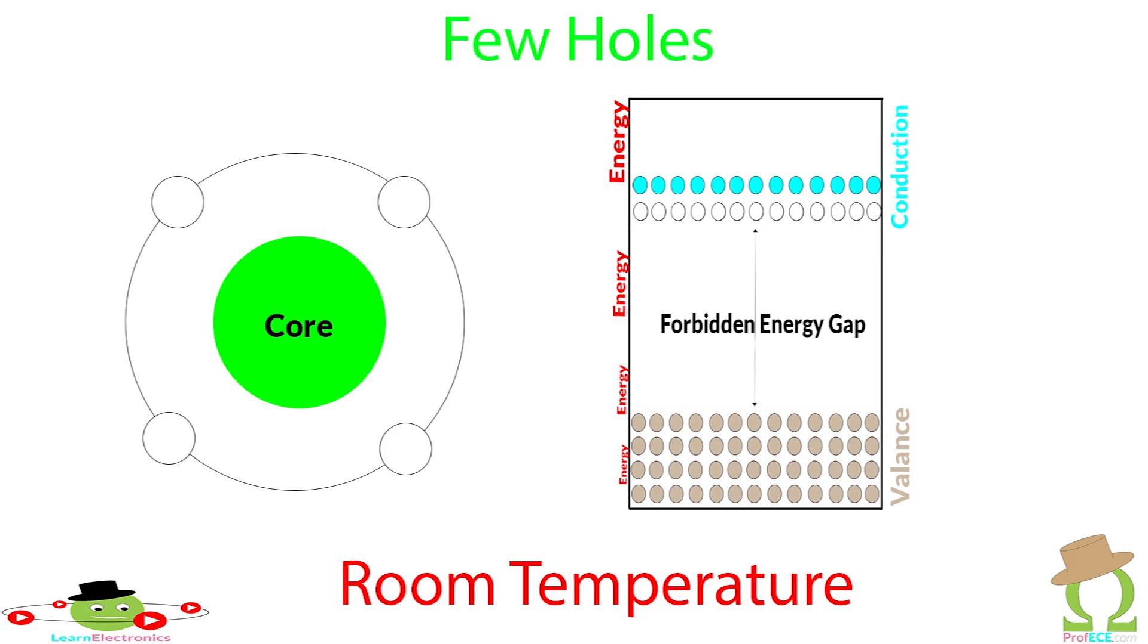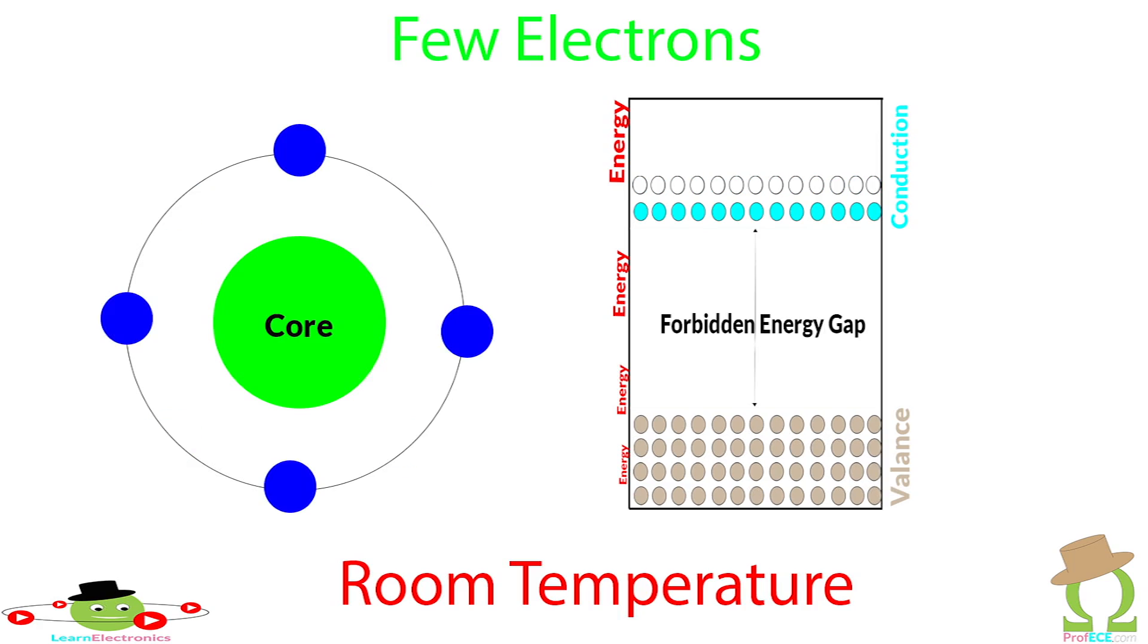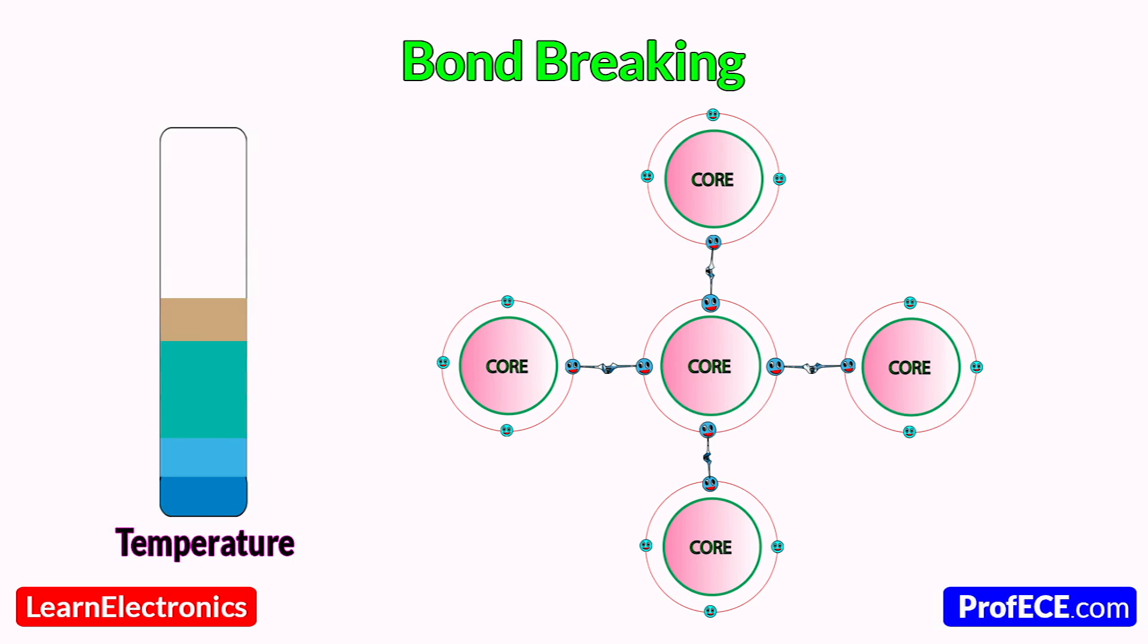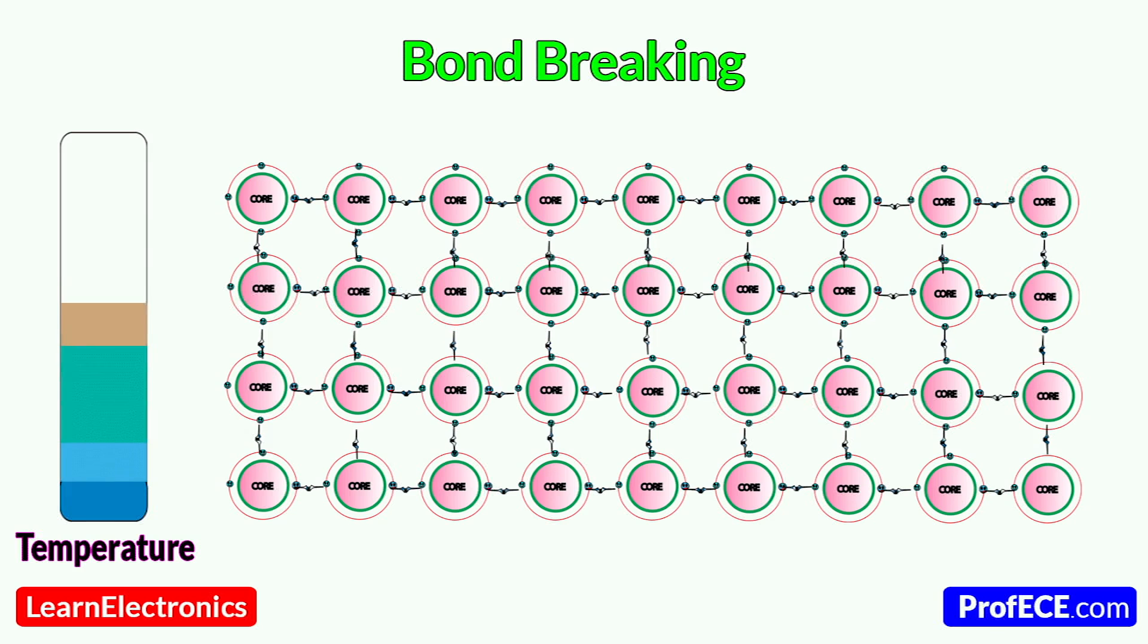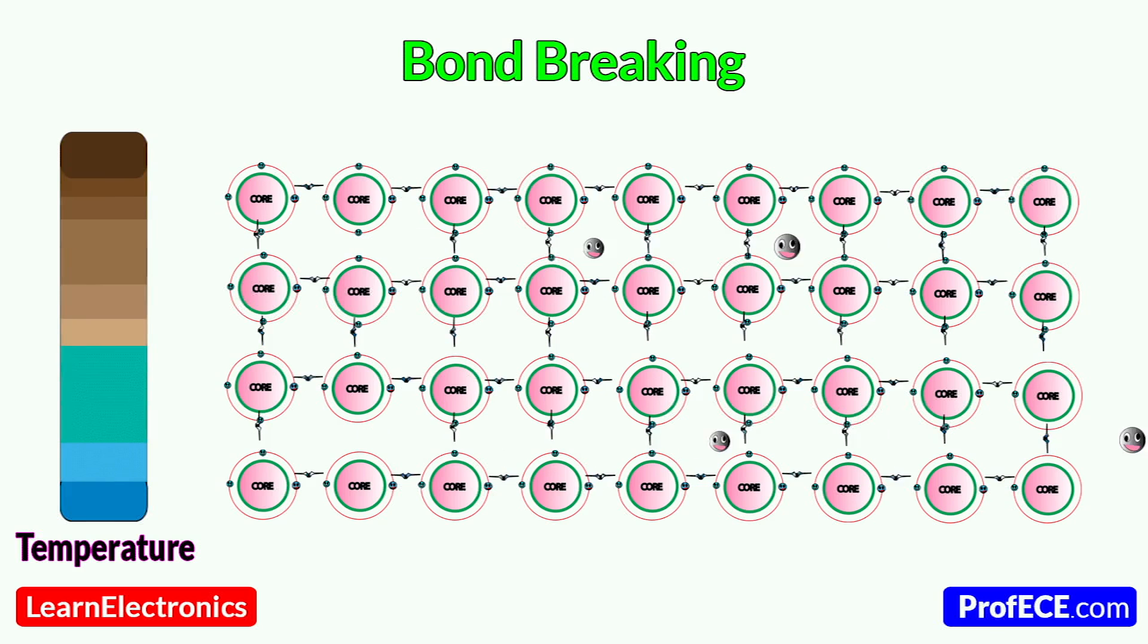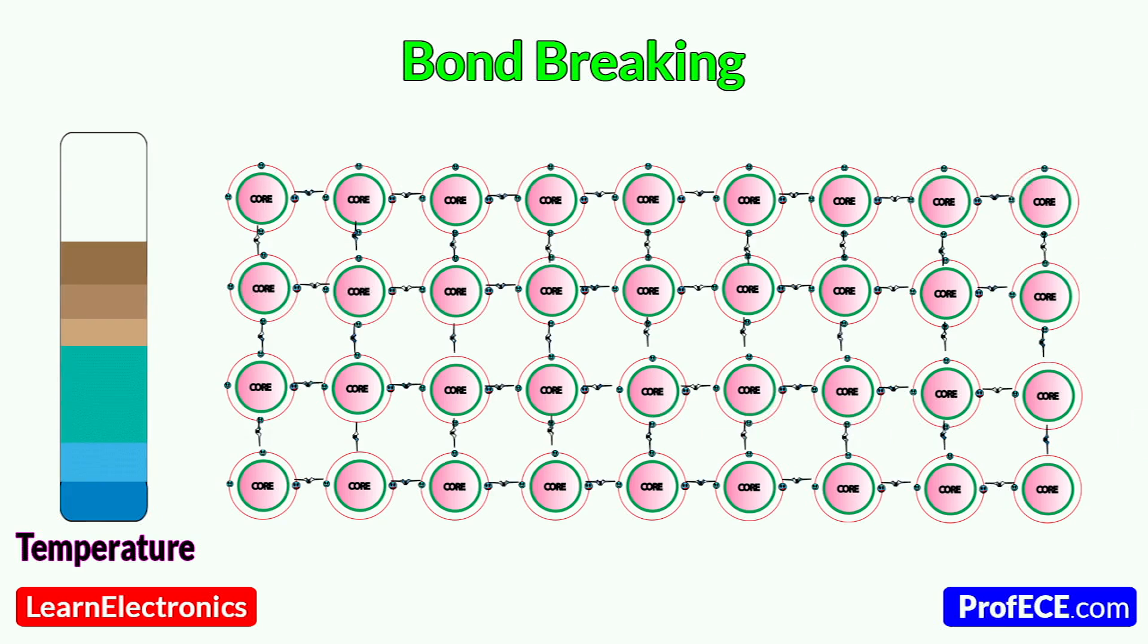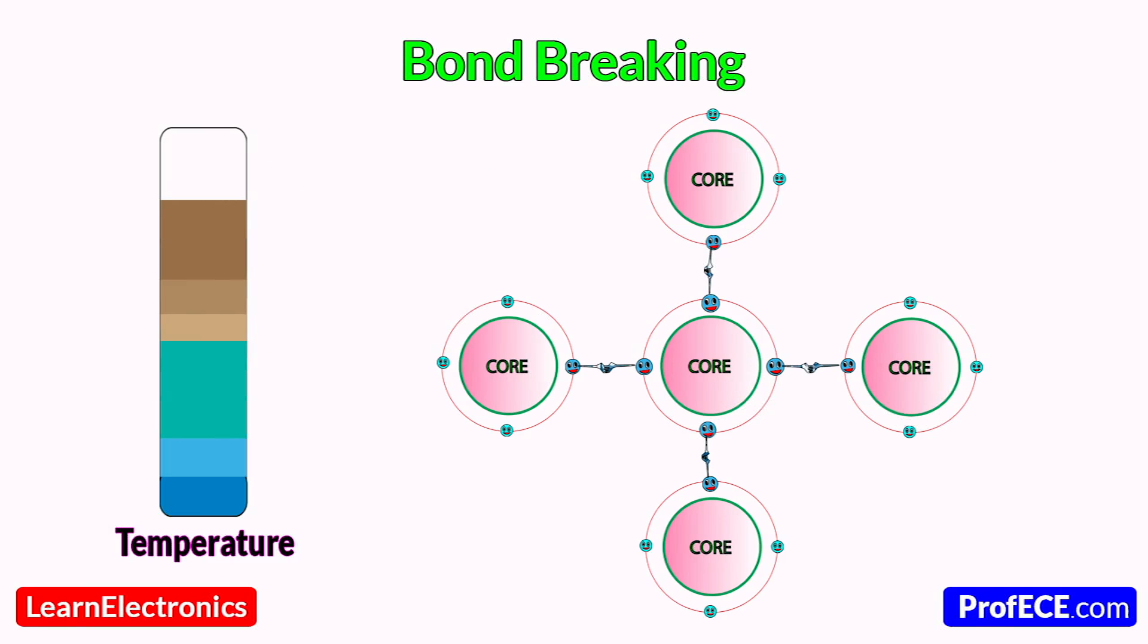Basically, outermost orbit electrons have covalent bonding with neighboring atoms and impurities. Covalent bonds easily break for tiny changes in temperature and smaller values of current. Whenever temperature increases, covalent bonds break. Few electrons escape from the orbit and are free to move across the material.